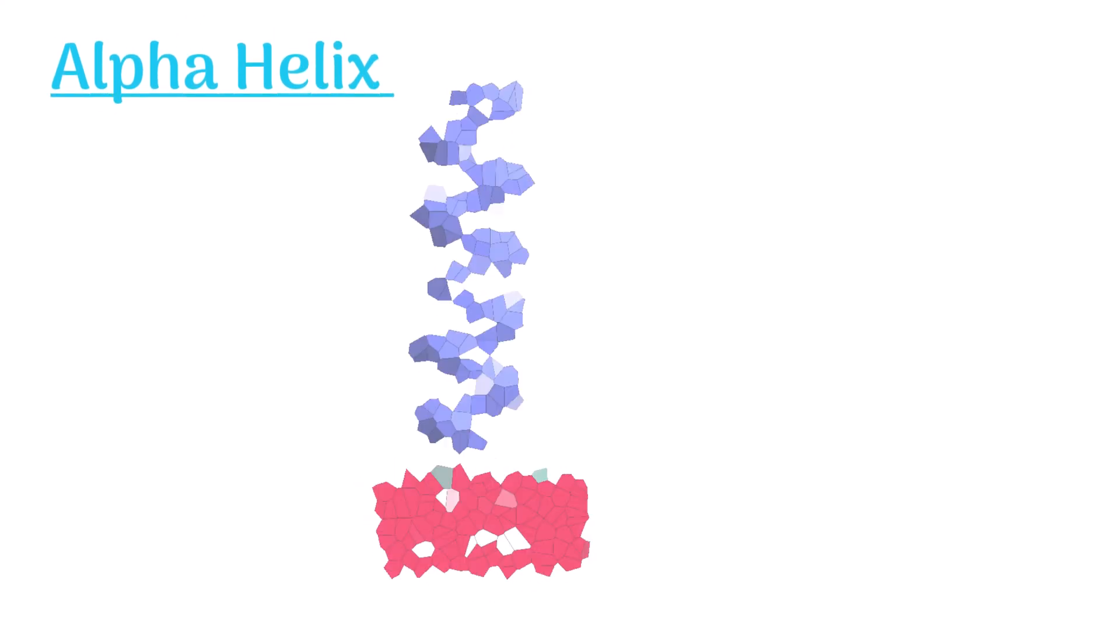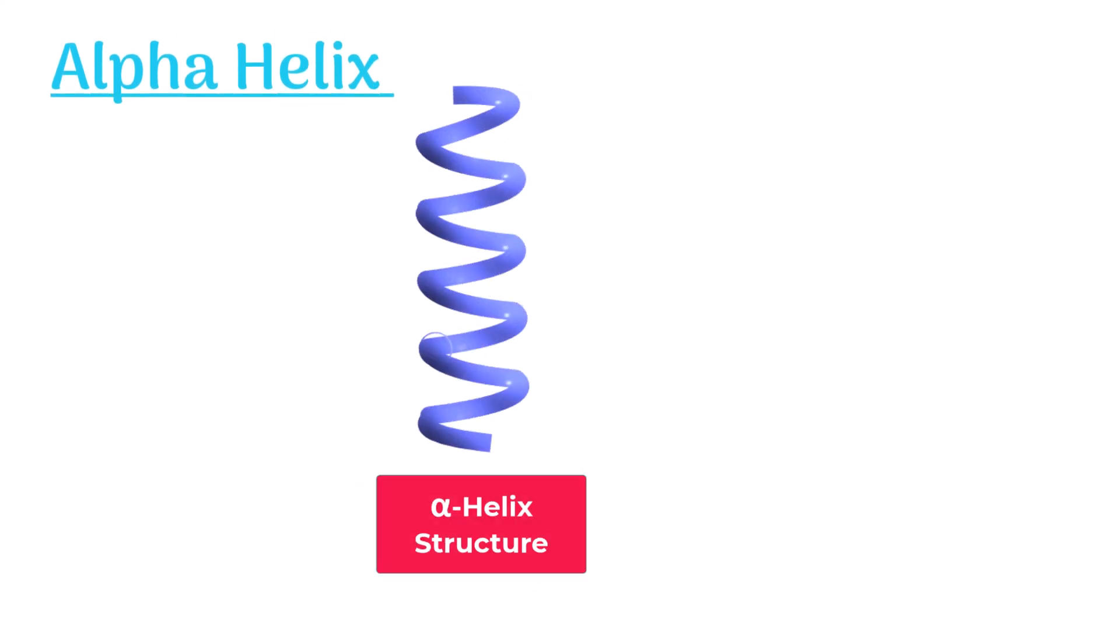Alpha helix. It is one of the most common structures in proteins. An alpha helical structure of proteins is just like a twisted ladder or a spring.